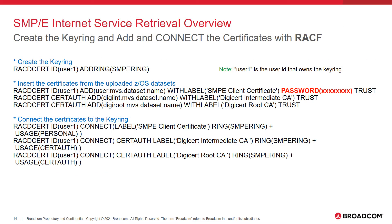Here are the commands for RACF. We start by creating a keyring. Please note the ID parameter of the keyring is the user ID that owns the keyring — in this example, User 1. After creating the keyring, add each of the three certificates to the RACF database. Note the password specified on the RACDCERT add of the User 1 certificate should be the same encryption password specified when the certificate was generated. Make a note of the with label parameter for the User Certificate, in this example SMPE Client Certificate, as this will be needed later when setting up the SMPE JCL. After the certificates have been inserted into the database, they are ready to be added to the keyring with the RACDCERT connect commands.